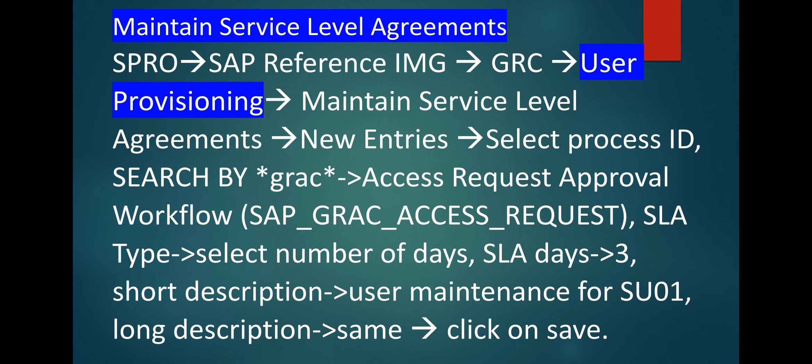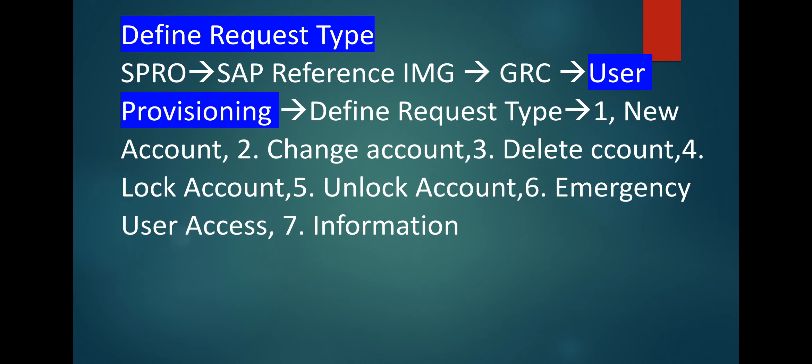Go to user provisioning and then maintain service level agreements. Click on new entries, select process ID — you can search by *GRC* — then go to the access request approval workflow. In access request approval workflow, you will see the role SAP_GRC_Access_Request. Then select SLA type as 'Number of Days', SLA days you can select three or according to your project scenario.